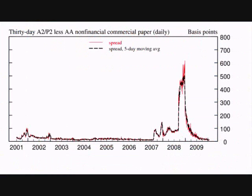The next tool the Fed has for controlling spending in the economy is changing the discount rate. The discount rate is the interest rate that banks pay to borrow funds directly from their Federal Reserve Bank. Banks are only required to hold onto a certain percentage of their customers' deposits, known as the reserve requirement. If a large withdrawal is made, to keep from falling below the reserve requirement, banks may need to borrow money from the reserve bank. The interest rate they pay on this loan is called the discount rate.